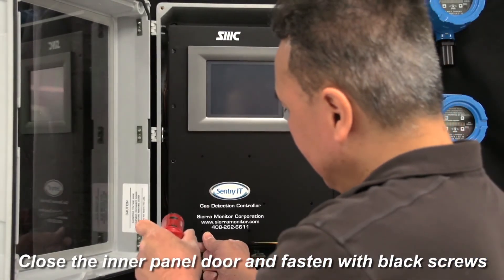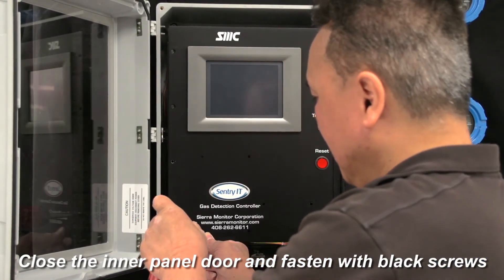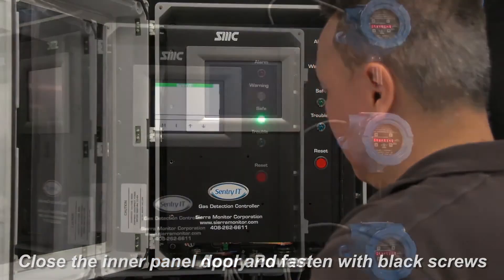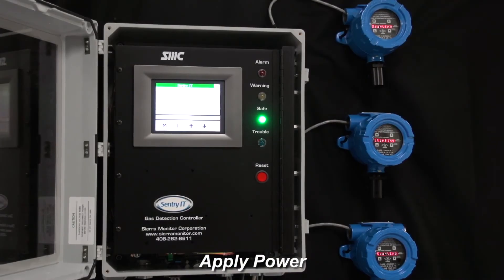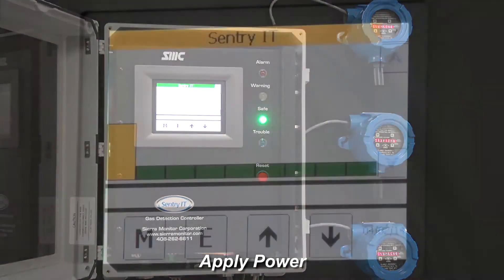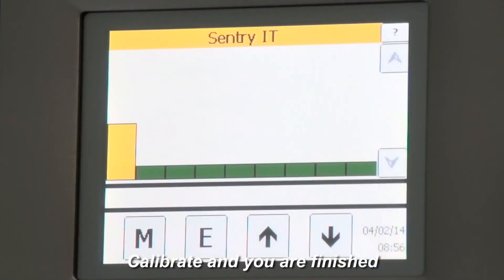Close the front panel and secure with the black screws provided. Apply power to the Sentry IT controller and any accessory items. Then, calibrate your Sentry IT controller following the instructions provided.